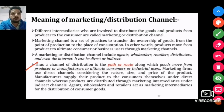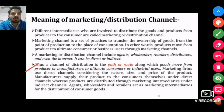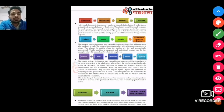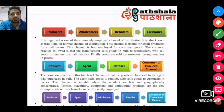A distribution channel is a path or route that moves goods from producer or manufacturer to the ultimate consumers and industry users. Marketing firms use direct channels to supply their products to consumers, and also distribute through marketing intermediaries. Wholesalers and retailers act as market intermediaries for the distribution of consumer goods.